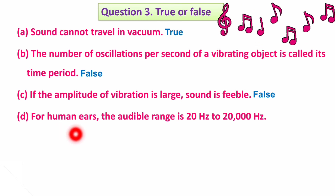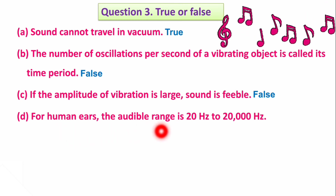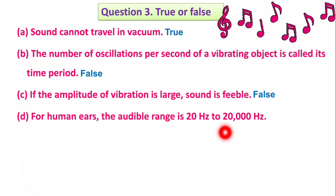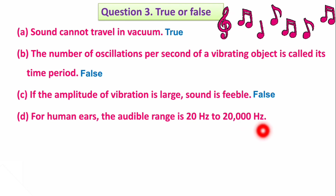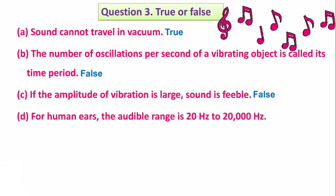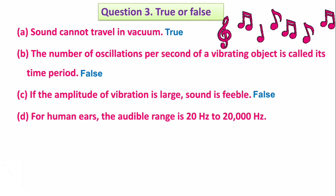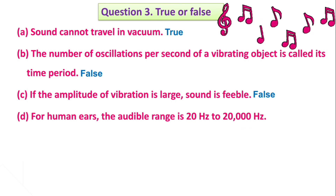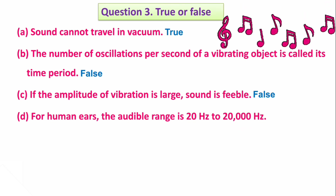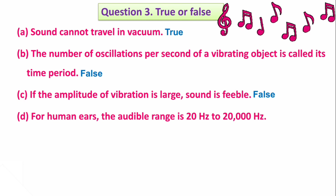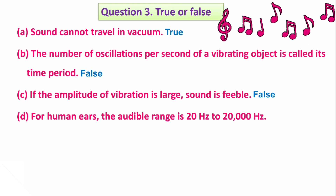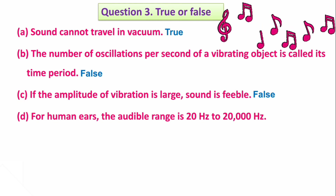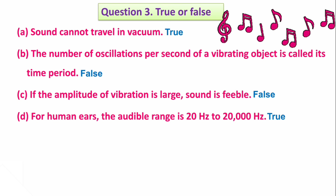Next one: For human ears, the audible range is 20 hertz to 20,000 hertz. Is it true or false? Yes, it is true.